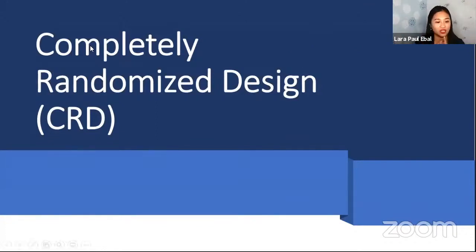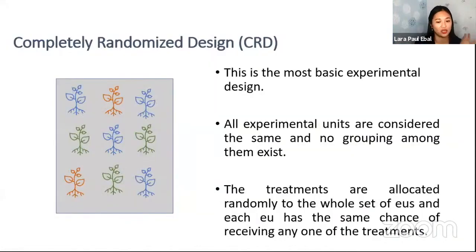So what is CRD? If you can recall, I mentioned the CRD initials earlier. This is just a completely randomized design. So this is the most basic experimental design. All experimental units are considered the same and no grouping among them exists. So there's no grouping, and then the treatments are allocated randomly to the whole set of experimental units, so that's the EUs. And each experimental unit has the same chance of receiving any of the treatments.